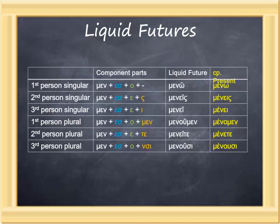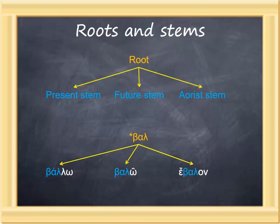The last item discussed before the semester break was the connection between roots and stems. The root is the most basic form of a verb. The stem is the most basic form in a particular pattern, such as present stem, future stem, or aorist stem. Many roots yield all the stems; however, the root may undergo some changes in forming the stems. This is particularly true of the present—for example, the root bal, which means to throw, adds another lambda when it forms the present, but it doesn't in the future or the aorist.